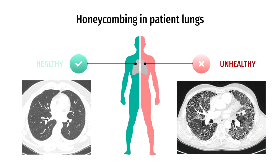To train our predictive model, we use CT scans. The CT scan on the right shows the lungs of a pulmonary fibrosis patient. It contains a pattern that resembles a honeycomb. Clinical studies show that the honeycombing pattern is the most influential risk factor for lung function decline. We extracted this honeycombing feature from CT scans to train our predictive models.